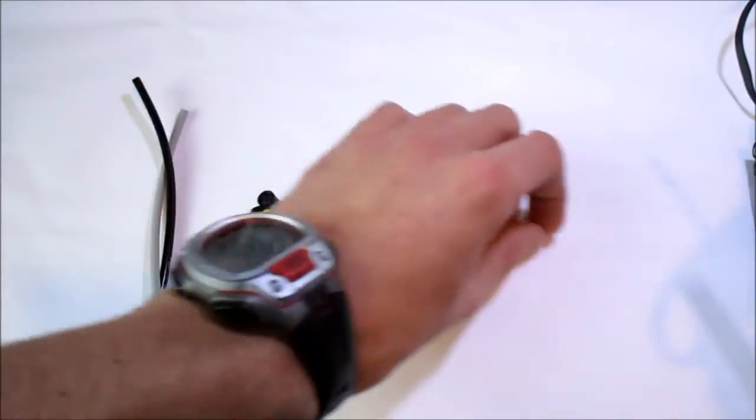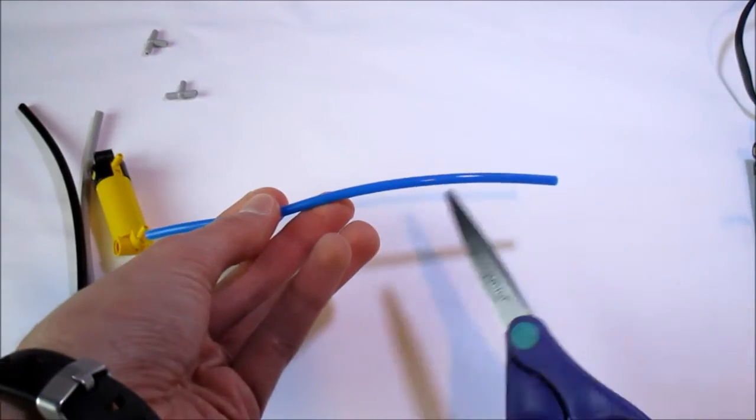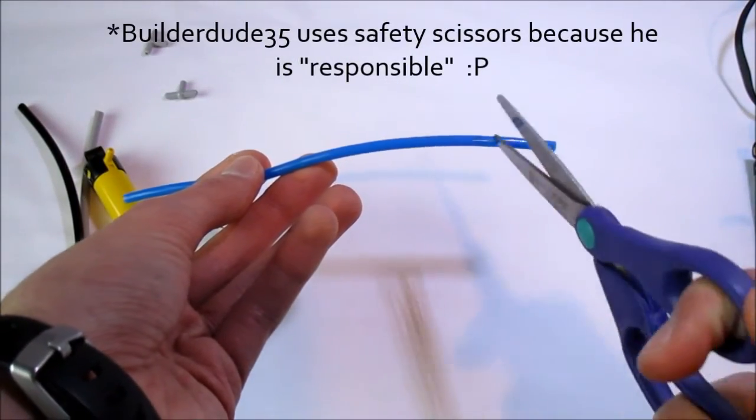Next up, if you have a tube that is longer than you would like it to be you could just simply use scissors to cut it down to size.